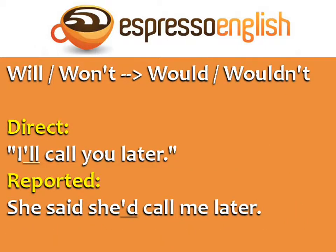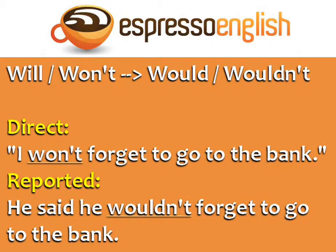Statements with will and won't become would and wouldn't in reported speech. Direct: 'I'll call you later.' Reported: 'She said she'd call me later.' Direct: 'I won't forget to go to the bank.' Reported: 'He said he wouldn't forget to go to the bank.'